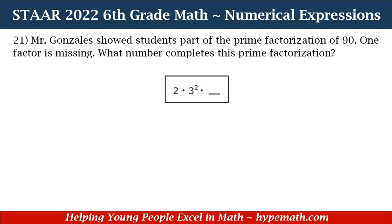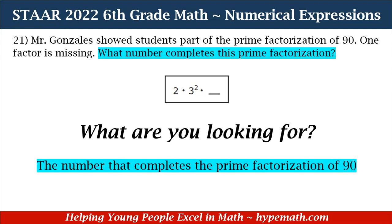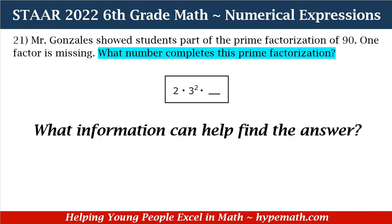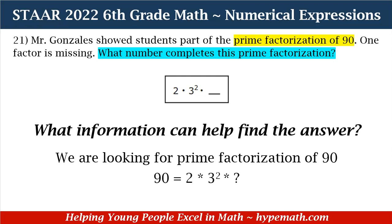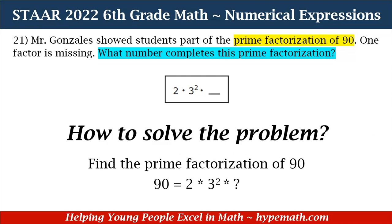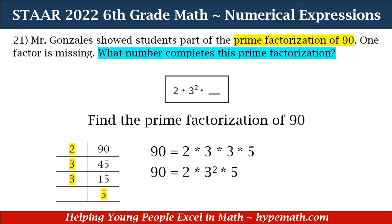Let's dive into our problem — and remember, we have our workbook so you can follow along. Number 21 says: Mr. Gonzalez showed students part of the prime factorization of 90; one factor is missing. What number completes this prime factorization? First, I ask myself what I'm looking for: the number that completes the prime factorization of 90. We already know three of the numbers: 2 times 3 squared, or 2 times 3 times 3. We are looking for that last number. So let's find the prime factorization of 90.